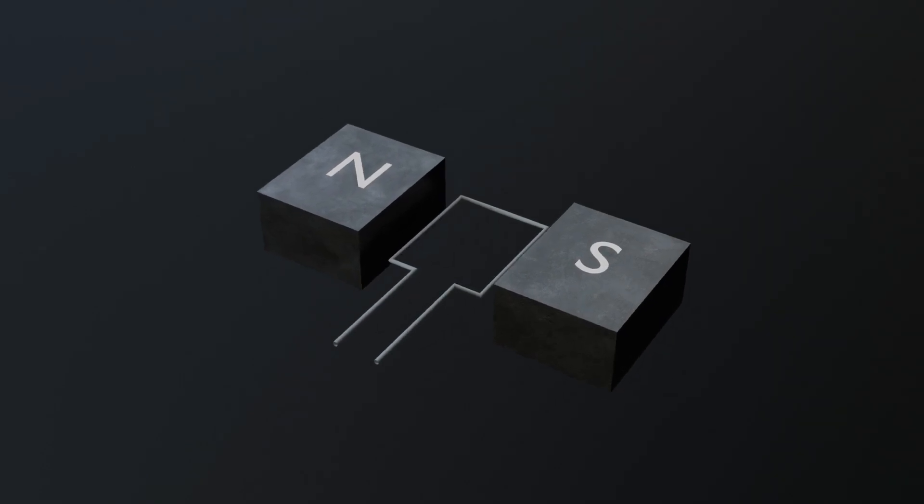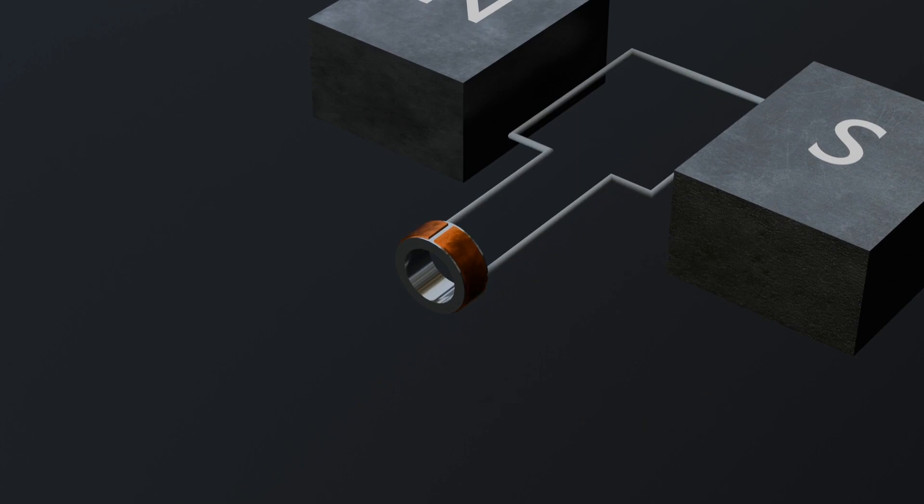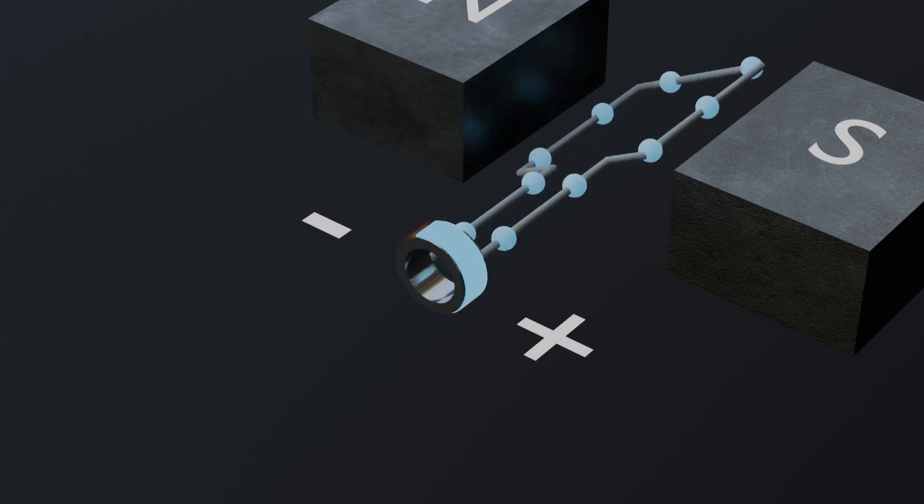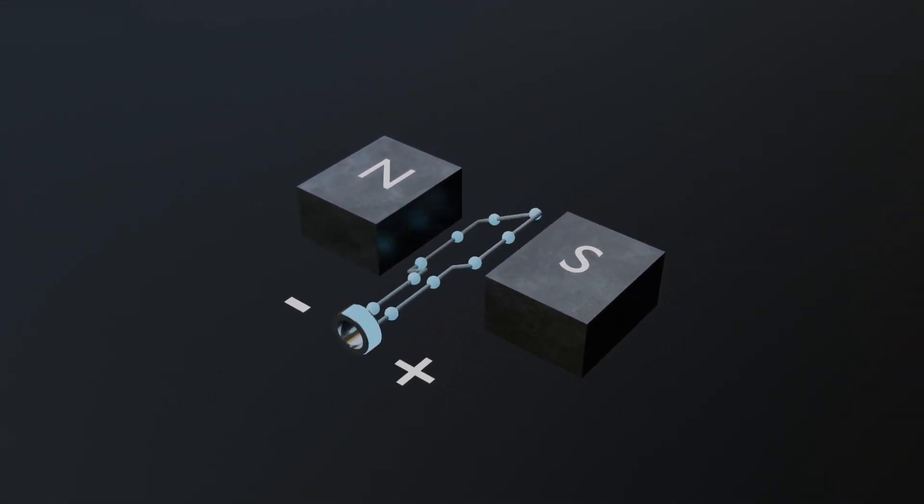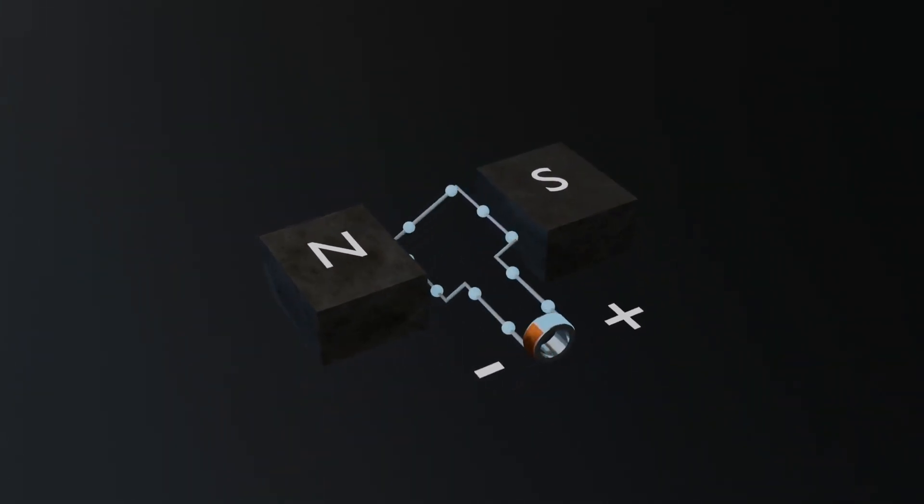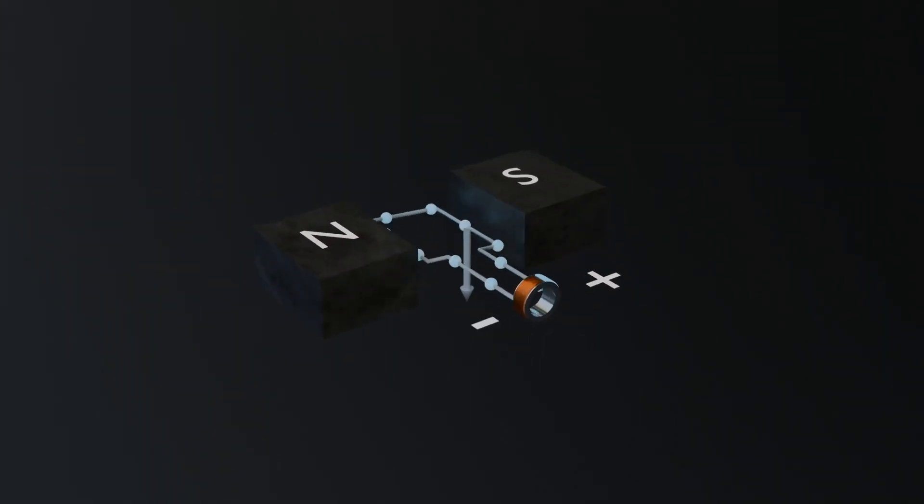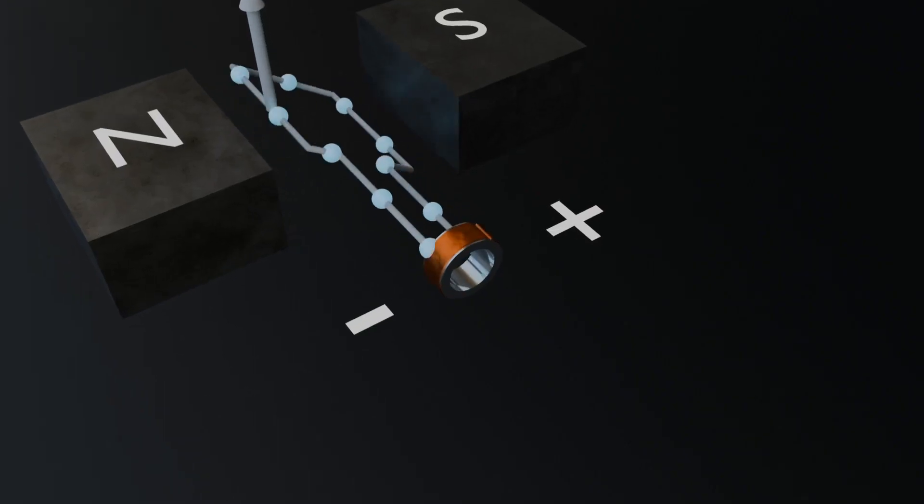To achieve this change in the direction of current flow, we use a component called a commutator. A commutator is a segmented cylindrical piece of conductor, which is connected to the loop in a specific way. As the loop rotates, each segment of the commutator alternates contact with the terminals of the current source. After half a rotation, the segments switch their connection to the source's polarity. This reversal of contact causes the current in the loop to change direction at just the right moment. As a result, the force on the coil also reverses direction, keeping the loop rotating continuously in the same direction. The commutator is essential for achieving this seamless change in current direction, solving the problem of oscillatory motion, and enabling the motor to work efficiently.